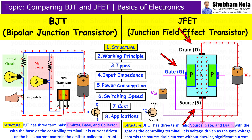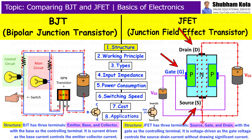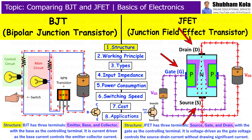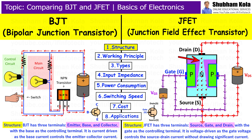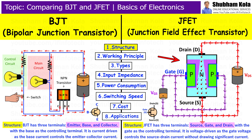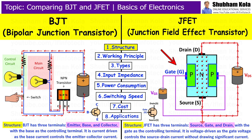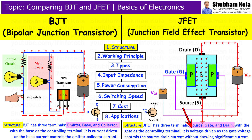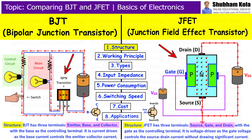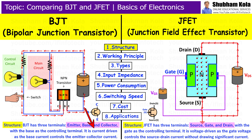JFET also has three terminals: Source, Gate, and Drain. The gate is reverse biased and controls the current flowing between the source and drain. This reverse biased operation ensures that the gate ideally does not draw current, making JFETs voltage-controlled devices. Thus, the main difference is that BJT is current-driven while JFET is voltage-driven.